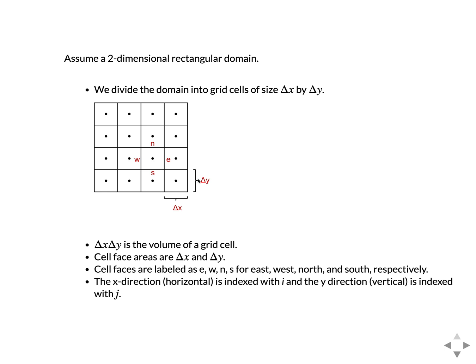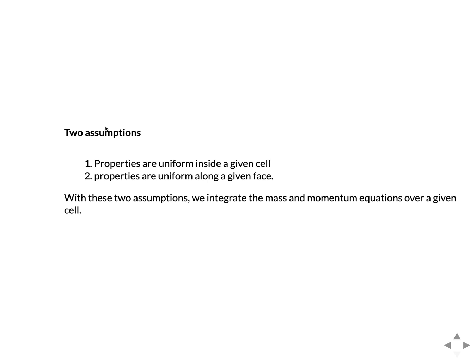We label the volume in two dimensions as delta x times delta y, and the corresponding face areas of a given volume are delta x or delta y. We label the faces of a given cell as the east, north, west, and south faces. The lower-left corner is our base grid point, with x increasing to the right and y increasing upwards. We index these cells by i,j where i indicates the x direction and j indicates the y direction.